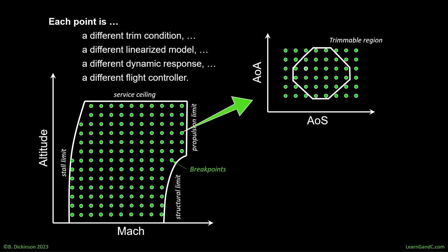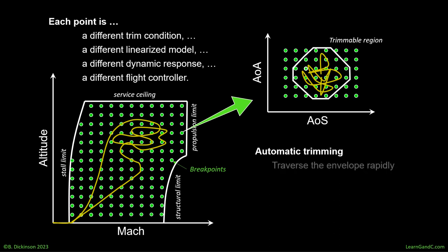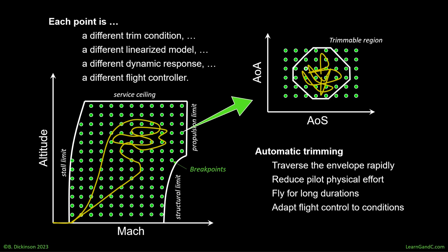When an aircraft takes off, performs its objectives, and lands, it's traversing through the breakpoints of the trimmable conditions. Automatic trimming is the automatic adjustment of trim tabs or control surfaces in response to the changing flight conditions. It allows the pilot to traverse the envelope more rapidly because they don't have to manually trim out forces and moments. This means the pilot workload reduces and their attention can be focused elsewhere. Thus, the pilot can operate the aircraft for longer without fatigue. For an autopilot, it means that a model-based linearized flight controller can be updated about changing trim conditions. And as a result, it's a step towards enabling unmanned flight.